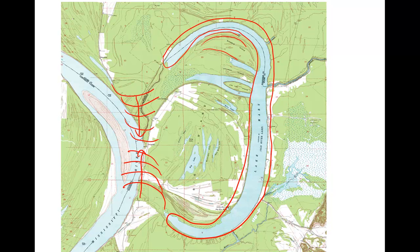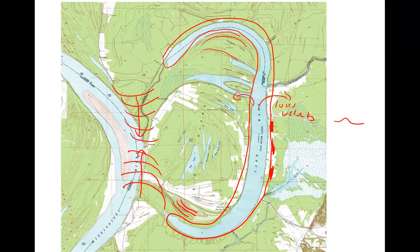These contours represent former locations of the channel banks as the channel meandered across the surface. When a flood occurs and water pours out of the channel, it immediately loses velocity. That causes sediment to deposit along the channel banks, forming slightly elevated ground — elevated enough that it shows up in the contours on a topographic map. These features are called meander scars. They provide a record of the channel's migration or meandering over time, making a record of the channel banks.